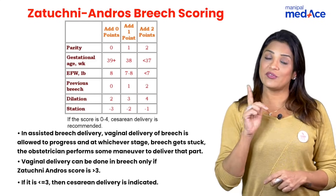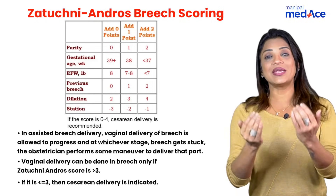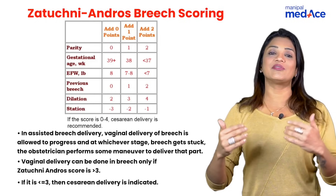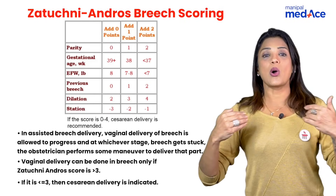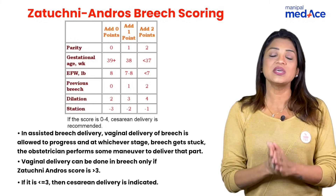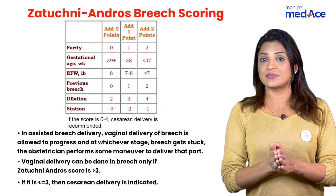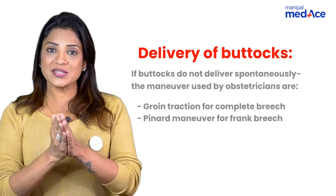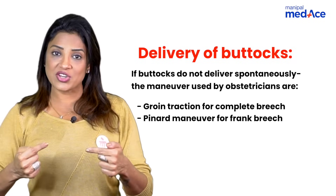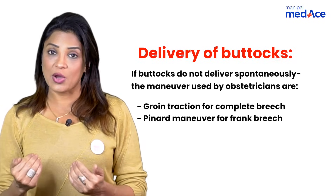In assisted breech vaginal delivery, we let the baby come out on its own, and wherever it gets stuck — whether at the level of the buttocks, shoulders, or head — we assist with different maneuvers. For delivery of the buttocks, if the patient needs some help, you may do groin traction, or sometimes Pinard's maneuver for frank breech if the legs are not coming out.